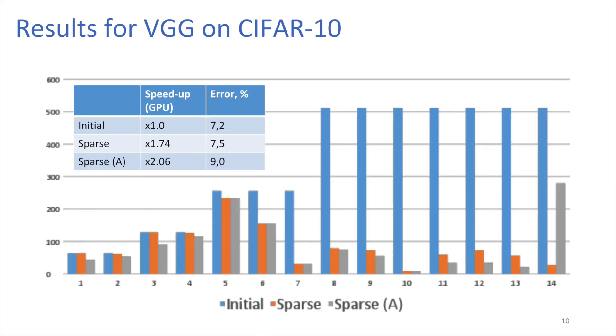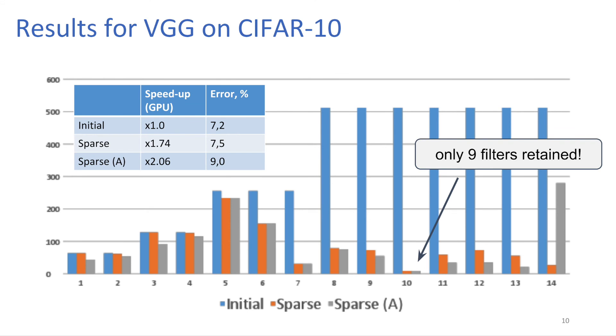We also applied SBP to deep convolutional architectures. Results for pruning of different layers of a VGG-like network on CIFAR-10 are presented on this slide. The largest layers of this network were severely pruned with almost no accuracy degradation. The width of the tenth layer dropped from 512 filters to only 9 filters. The gray bars correspond to SBP annealing procedure, where we sparsify the first layers more aggressively.